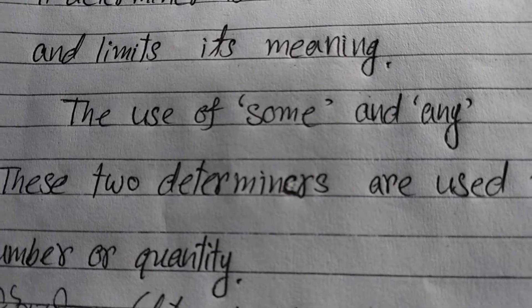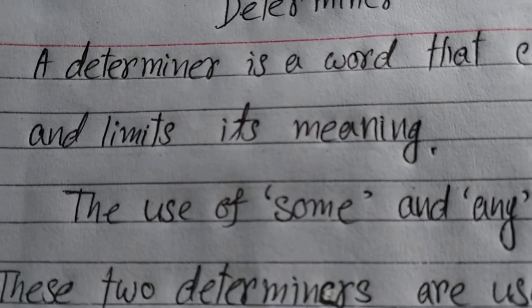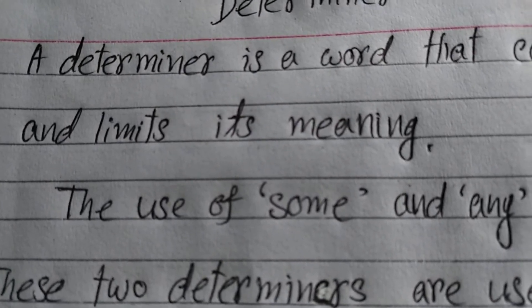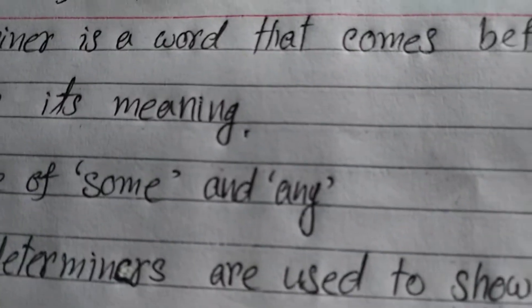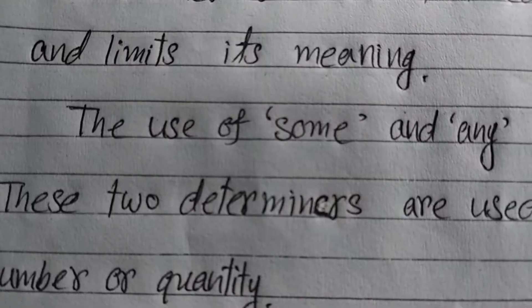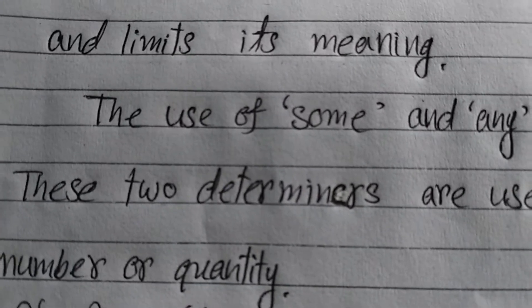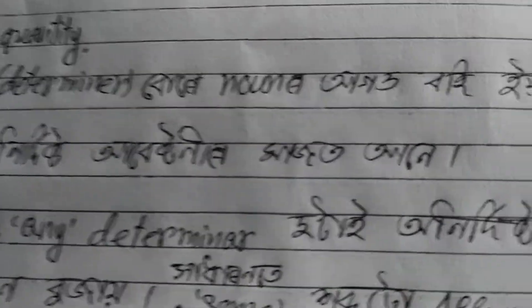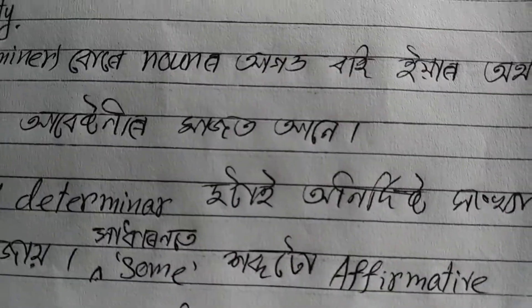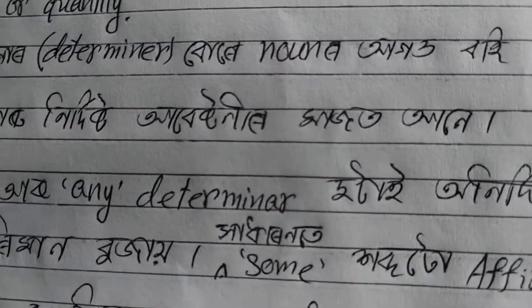A determiner is a word that comes before a noun and limits its meaning.